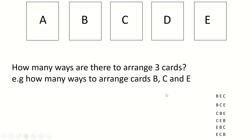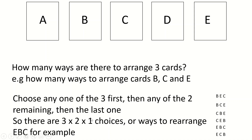So when I do that first bit of maths — five times four times three — I'm going to have to divide by six to get rid of all the copies, because I only care about one of them. I don't care about the different arrangements; I just want one list. How many ways are there to arrange three cards? Well, you've got three ways of choosing which card comes first. Once you've chosen that, you only have two choices for the second card, and then one choice left. So there are three times two times one choices to arrange three cards, which is six.